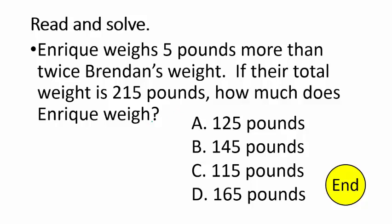Tricky question. We don't know how much Enrique weighs, we don't know how much Brendan weighs, but we do know that Brendan plus Enrique equals 215. We can use algebra to help solve it. If we call Brendan X — X is an unknown number — and we look at Enrique, he weighs 5 pounds more than twice Brendan's weight. So Brendan is X.